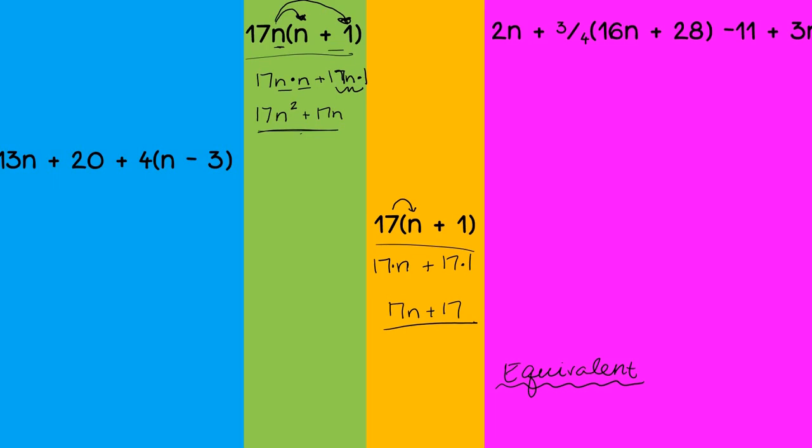Alright, so let's go ahead and pop over to blue here. First and foremost, we always want to break those parentheses. So let's go ahead and distribute out that 4. So I have 13n plus 20 plus, this would be 4 times n minus 4 times 3. It's going to work to 13n plus 20 plus 4n minus 12. So let's see what we can combine here. I've got 13n and 4n. Both have n's with no exponents or an exponent of 1. And then I have 20 and I have 12.